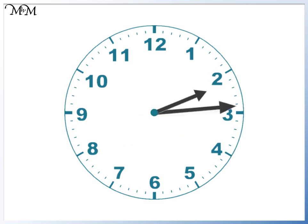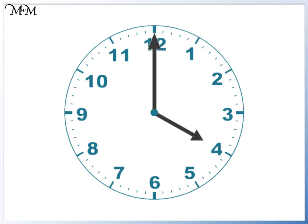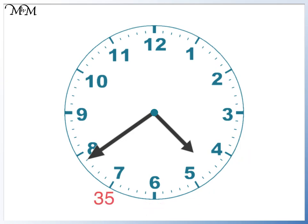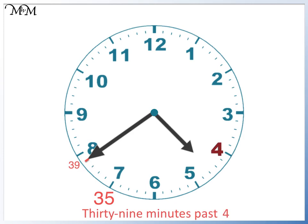Finally, we'll start at four o'clock. From here, the minute hand moves four places past seven. To find out how many minutes this is, we can begin by counting in fives until we reach seven: five, ten, fifteen, twenty, twenty-five, thirty, thirty-five. From here, we can count up in ones: thirty-six, thirty-seven, thirty-eight, thirty-nine. So thirty-nine minutes past. The hour hand has moved past four, so the time is thirty-nine minutes past four.